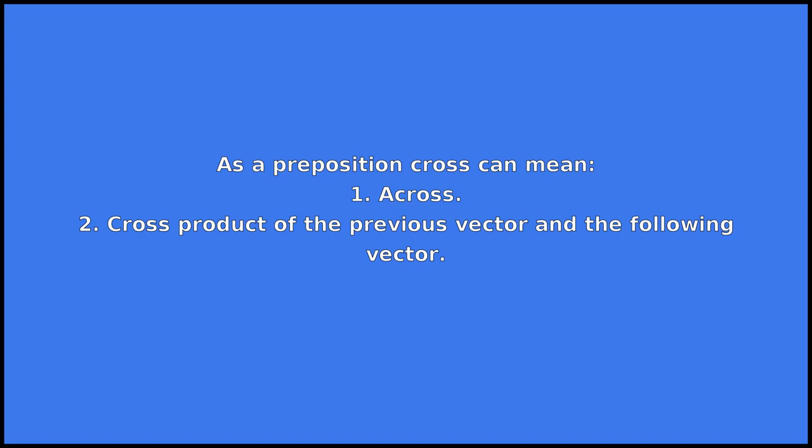As a preposition, CROSS can mean: 1. Across. 2. Cross product of the previous vector and the following vector.